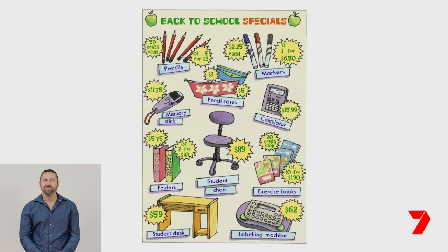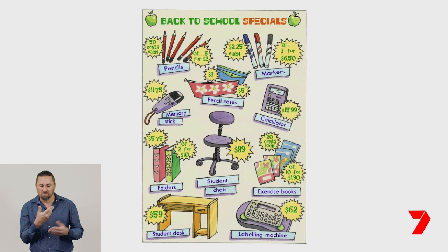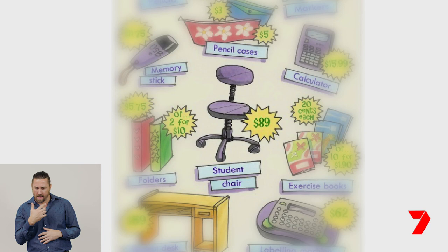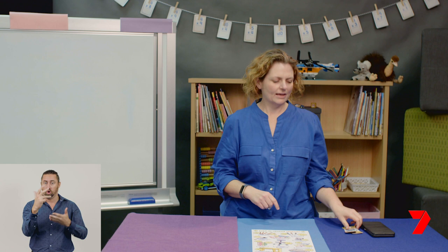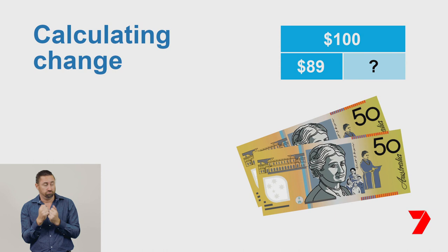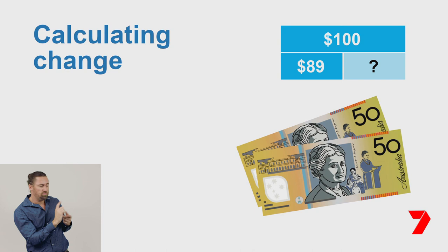Here is a shopping brochure I received in my letterbox yesterday. It is advertising some back-to-school specials. I think I would like to buy a new student chair. This one is $89. I have two $50 notes, which is $100. That's more than I need for the chair, so I'll get some change. Let's work out how much change I'll get using a part-part-whole diagram and a number line. The whole is $100 and one part is $89. The change will be the other part.